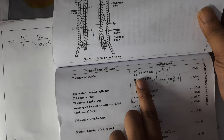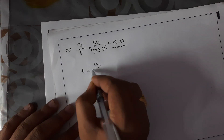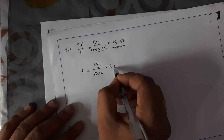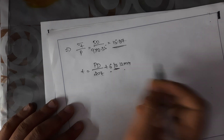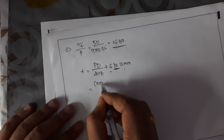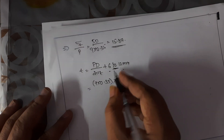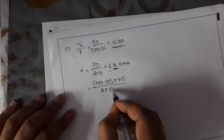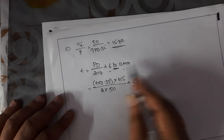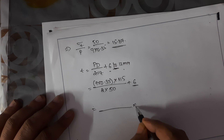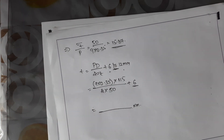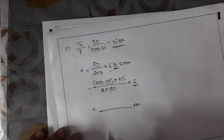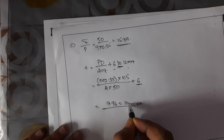Applying the first formula t = (P × D) / (2 × σt) + 6 to 12 mm. Substituting P = 9 × 0.35, D = 115 mm, σt = 50 N/mm², and adding 6 mm, we get t ≈ 9.96 mm, which rounds to t = 10 mm. The thickness of the cylinder is now determined.